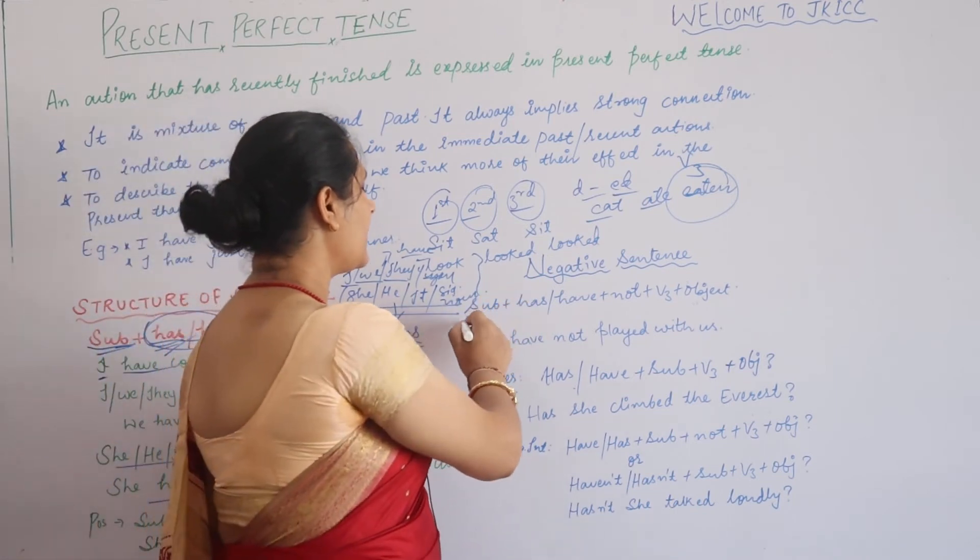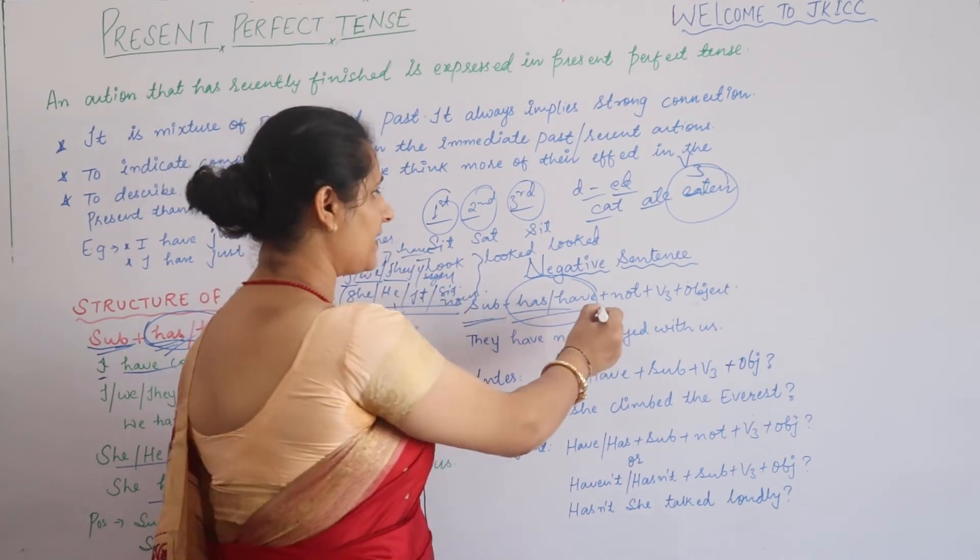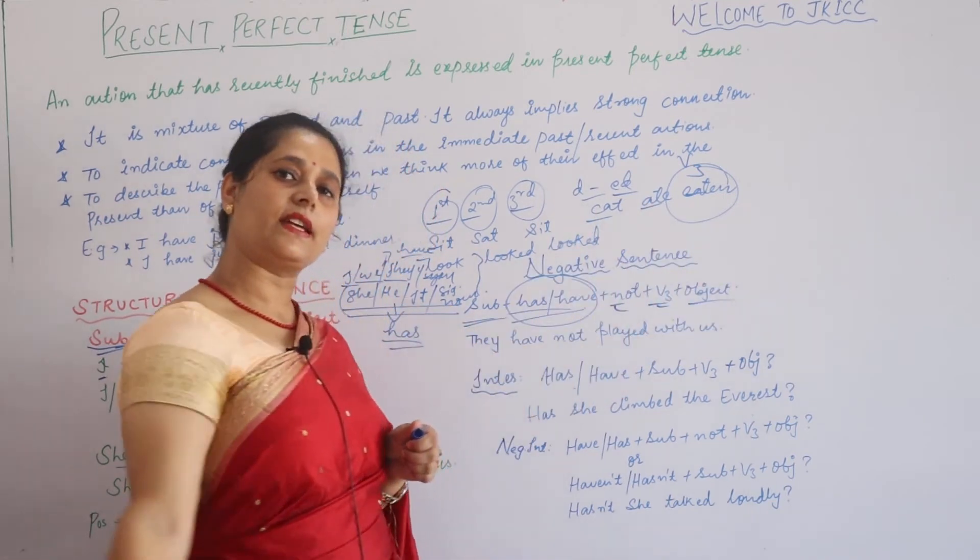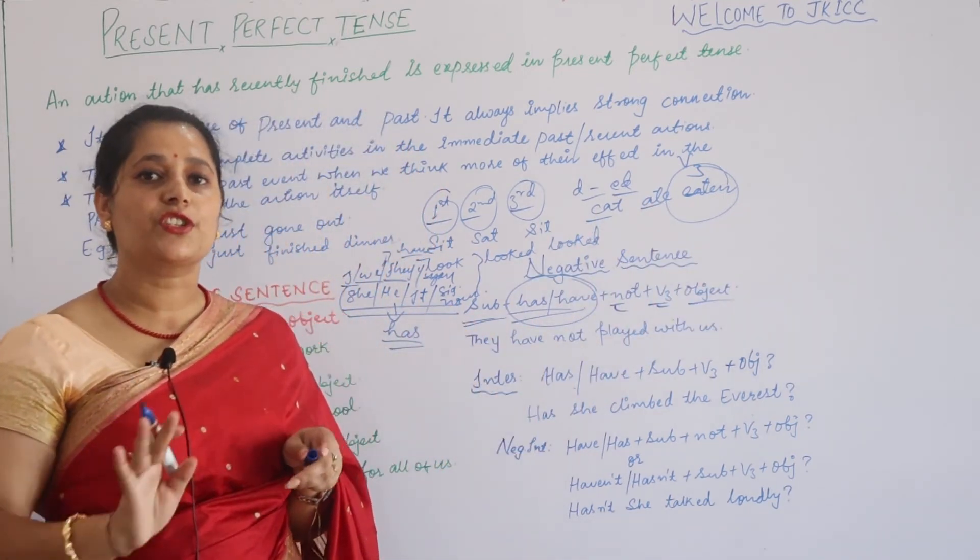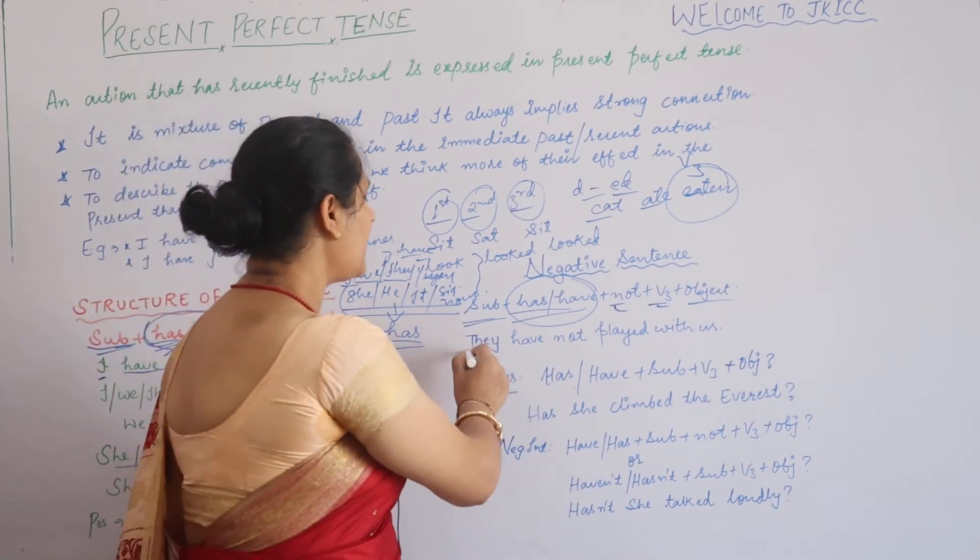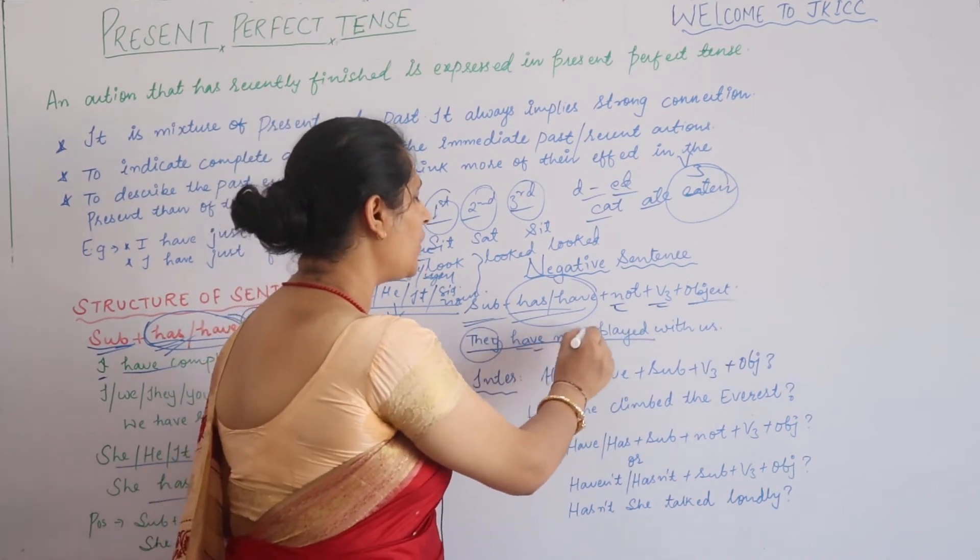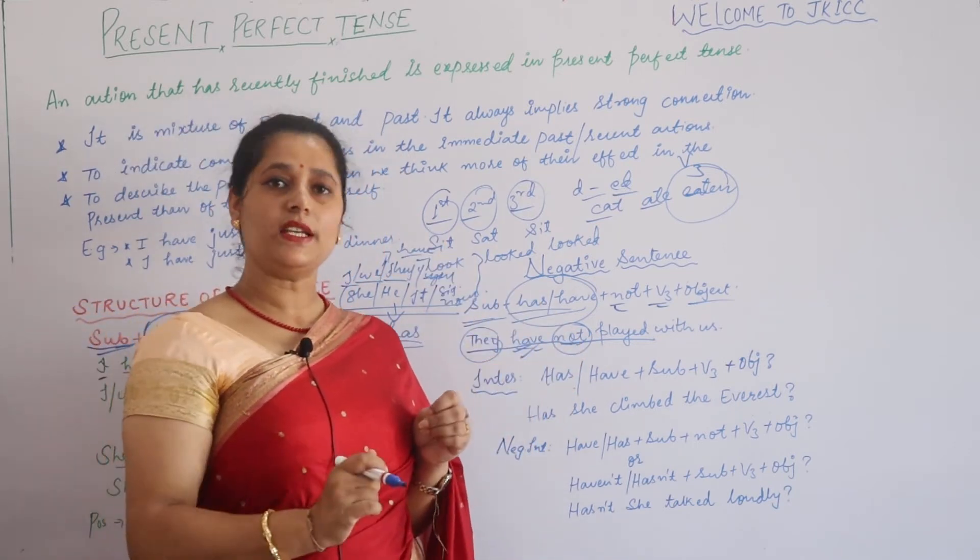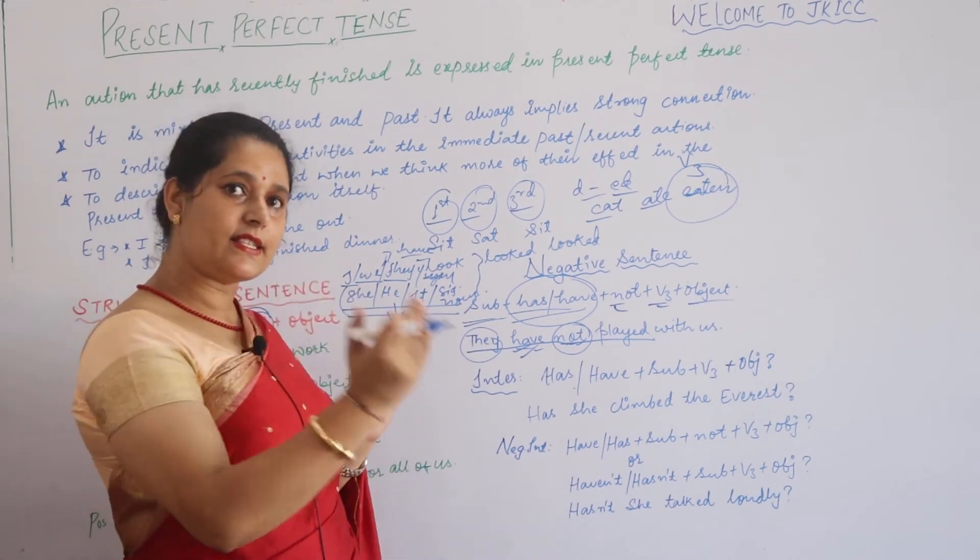We will do subject plus has/have, where the helping verb comes, immediately after that you add 'not', and then we will use third form of verb and then object. Like, they have not played with us. Woh log hamare saath nahi khel chuke hain. When we add 'not' after has or have, the sentence becomes negative. This is how we make negative sentences.